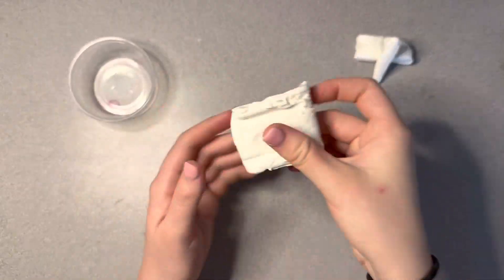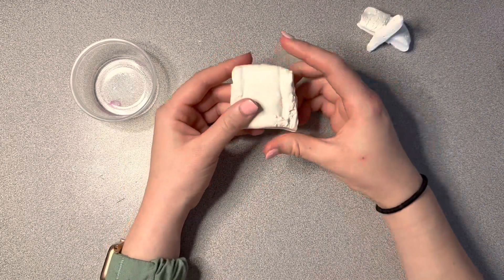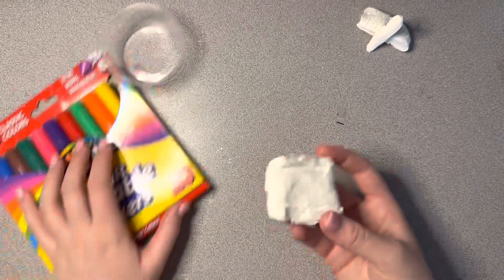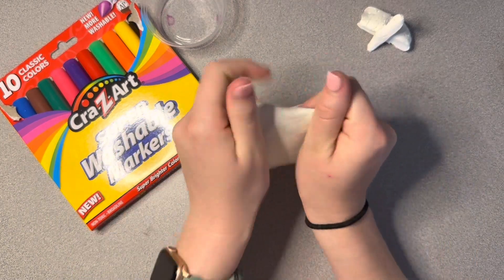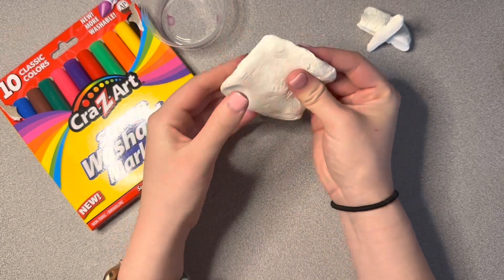But with this one, you're going to start with your big one because this is the base for your cookie. And we're actually going to color these with markers. The way it works is I'm just going to go ahead and start flattening it out. I'm not going to mold this into anything just yet.